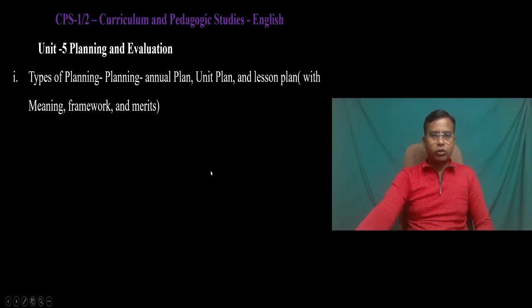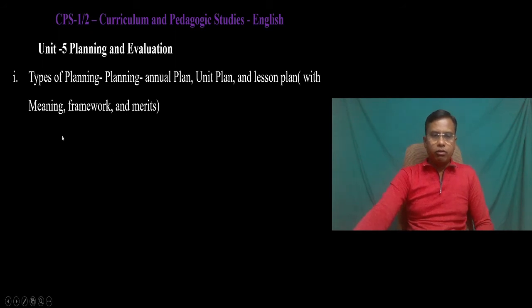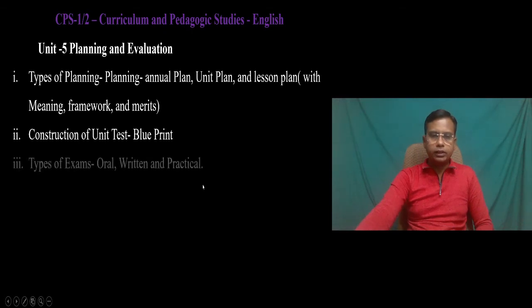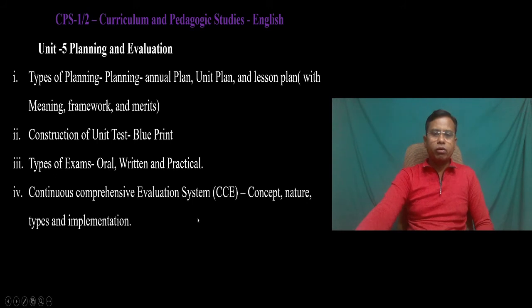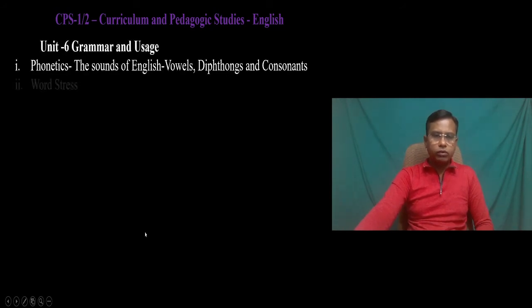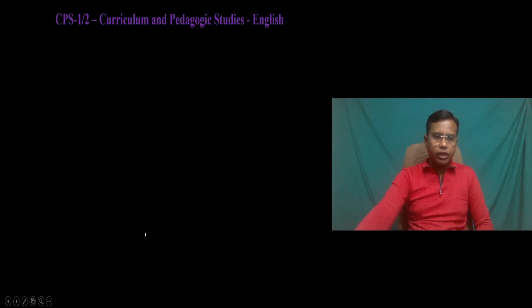Unit 5 is Planning and Evaluation. We have to study types of planning — annual plan, unit plan, and lesson plan — with their meaning, framework, and merits. Then construction of a unit test, including a blueprint, and types of exams: oral, written, and practical. We also have to study the Continuous Comprehensive Evaluation system — CCE — its concept, nature, types, and implementation.